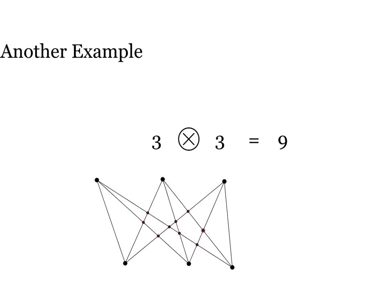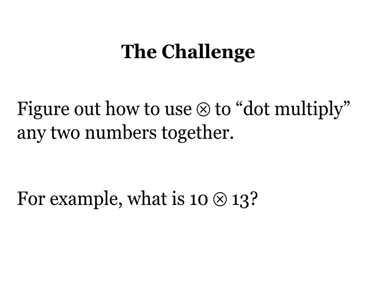But if you understand how to draw that picture, draw dots on the top, dots on the bottom, connect them, and count the intersection points, you can figure out how to dot multiply any of these two numbers too. Well, sort of. And in fact, that's the challenge that I have for you right now, which is, can you figure out how to use dot multiplication to actually calculate what any two numbers dot multiplied together are?